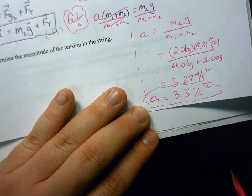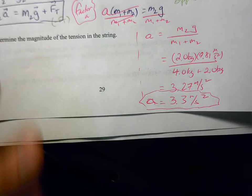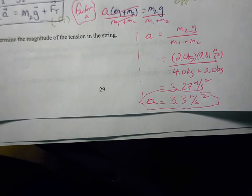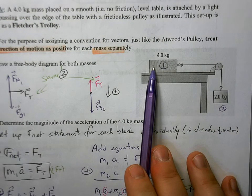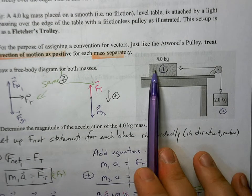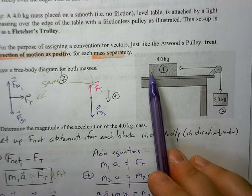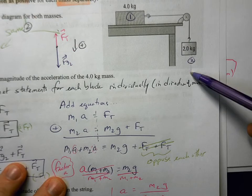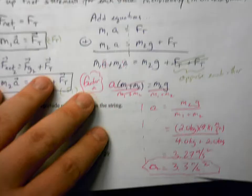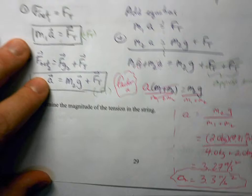It only asked for the magnitude, so we don't need to worry about direction. Just like the Atwood's pulley, both masses accelerate at the same rate. So the 4 kg block accelerates at about 3.3 m/s² to the right, while simultaneously the 2 kg hanging block accelerates downward at 3.3 m/s².